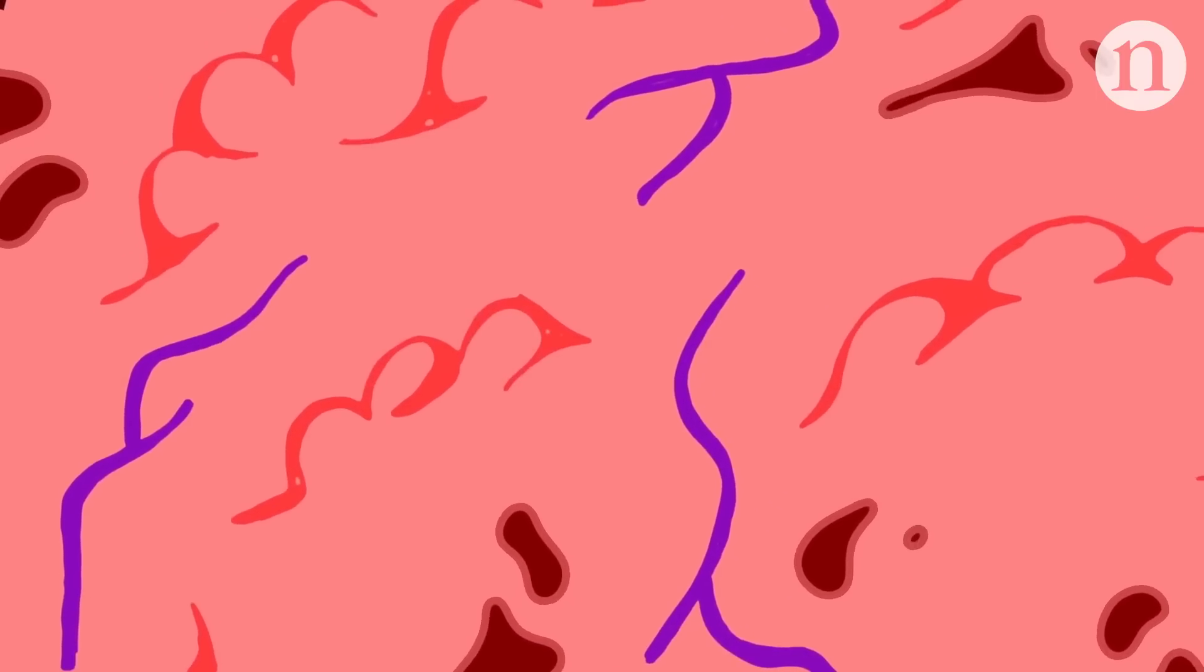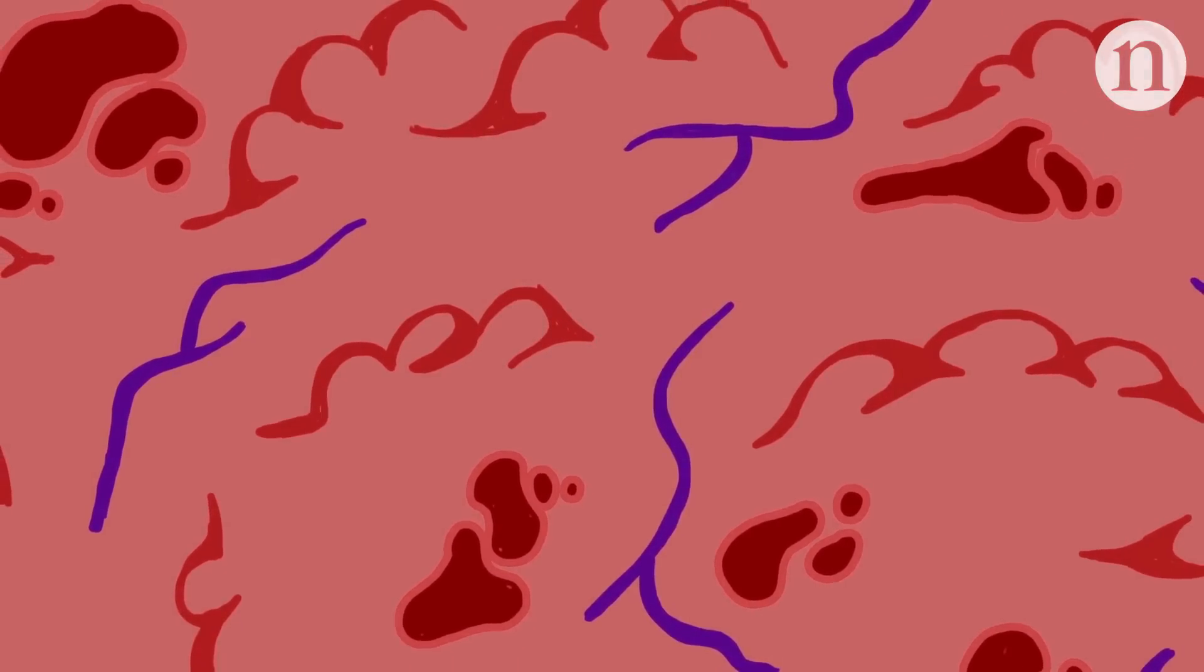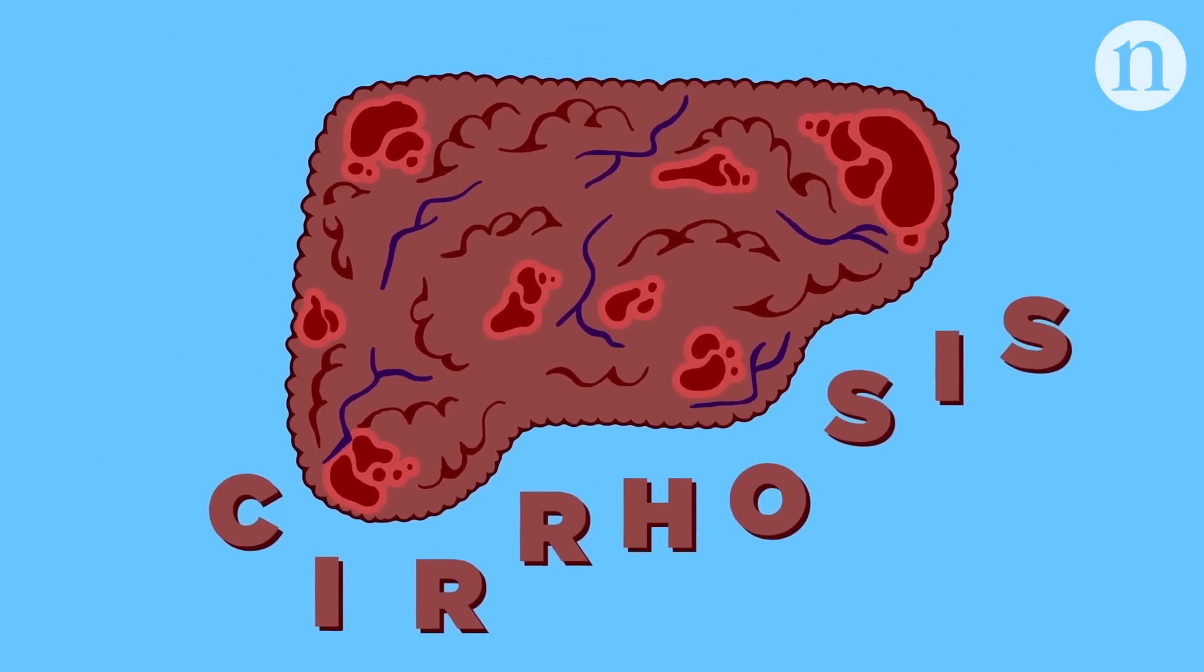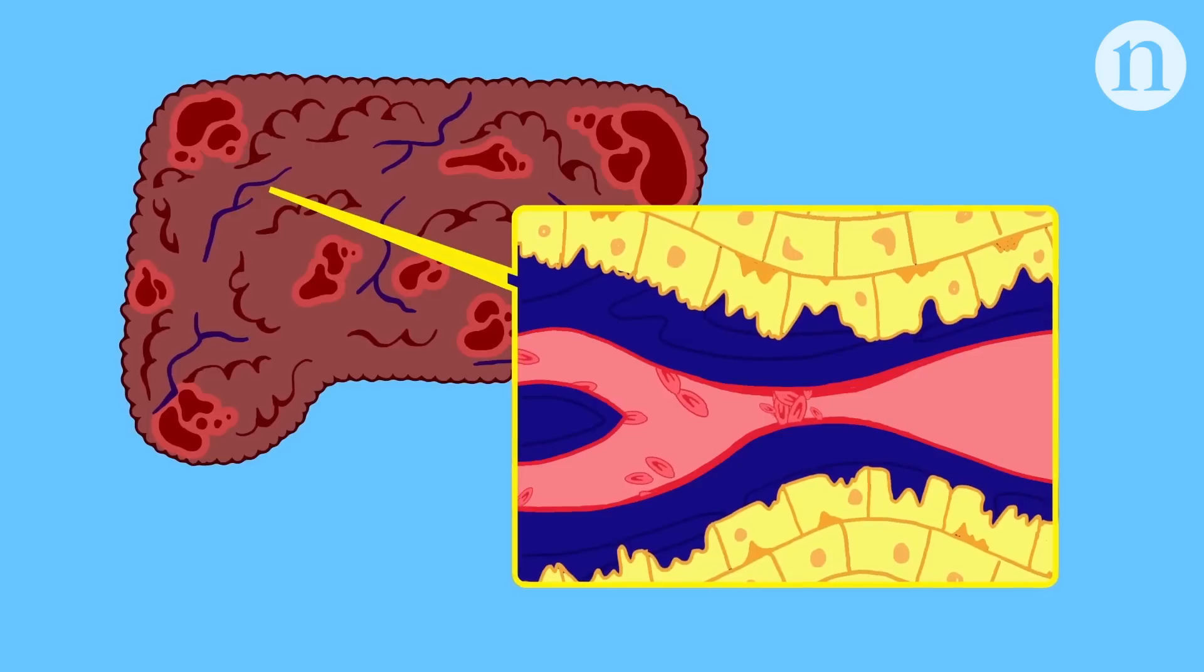This scarring is caused by a build-up of fibrous collagen proteins which begin to replace healthy tissue. If the fibrosis keeps worsening, the liver can progress to a state known as cirrhosis. At this stage, excessive scarring hampers the liver's blood flow and stops it being able to do its job.